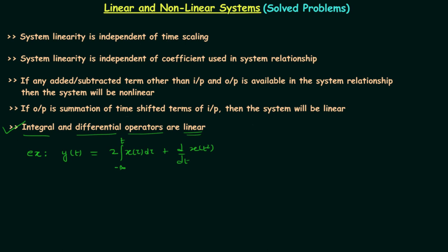Let's see the first term, which is two times the integration from minus infinity to t of x(τ) dτ. Here, two is the coefficient, and in the other terms the coefficients are 1. From the second property we know system linearity is independent of the coefficient used in the system relationship. So because of the coefficients in this system relationship we will get a linear result.